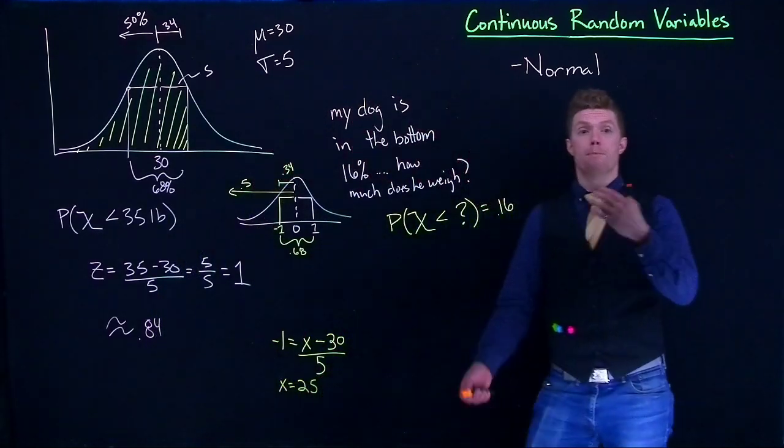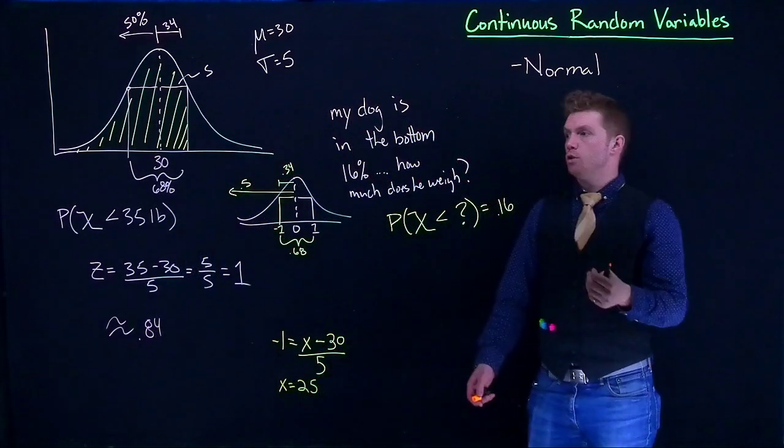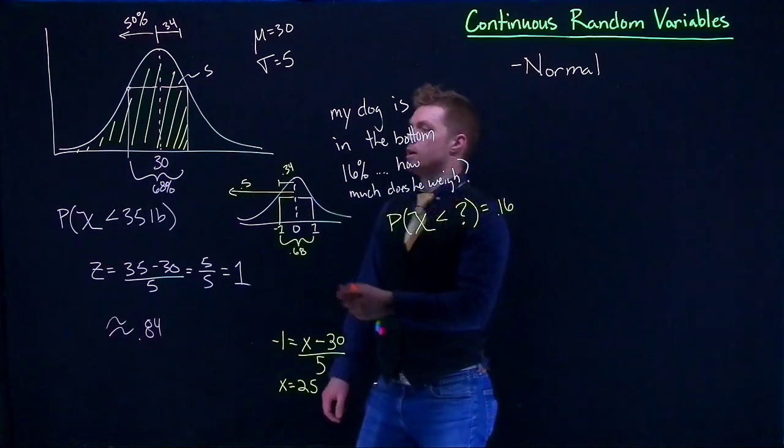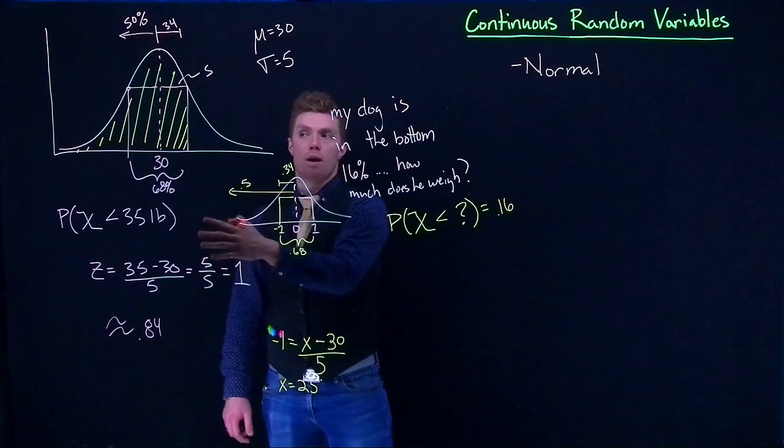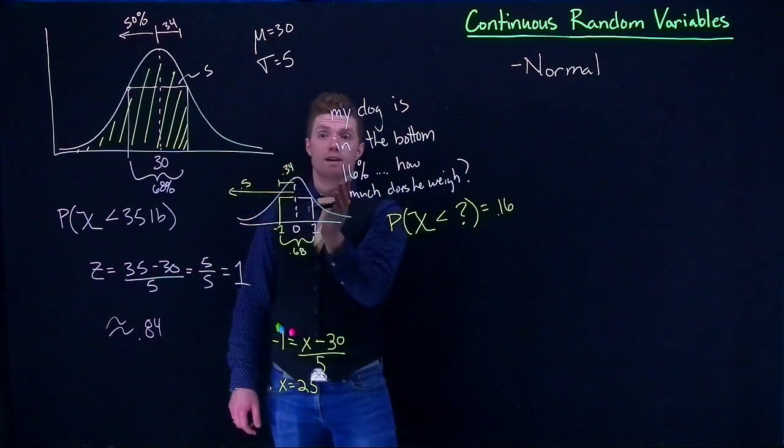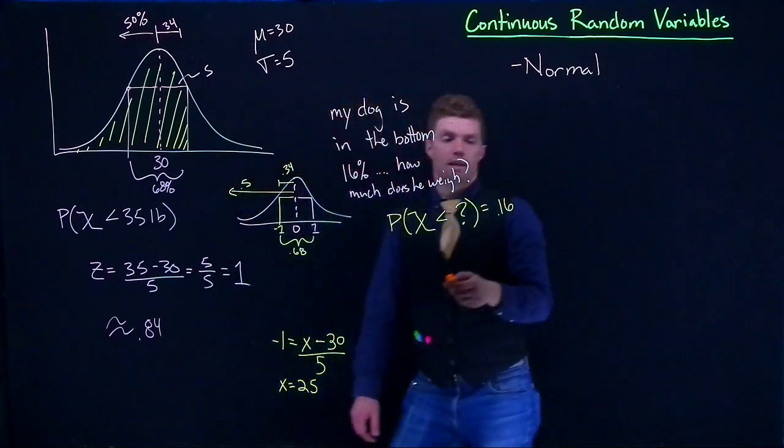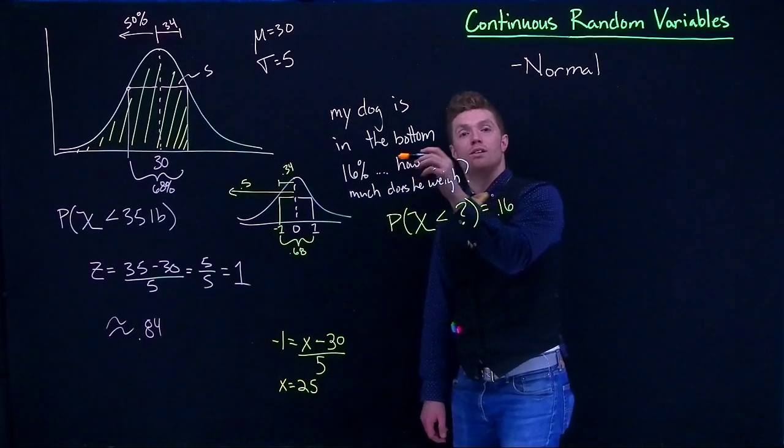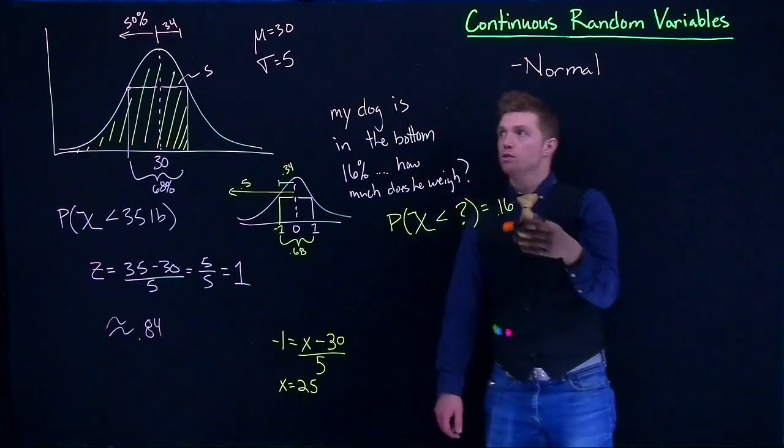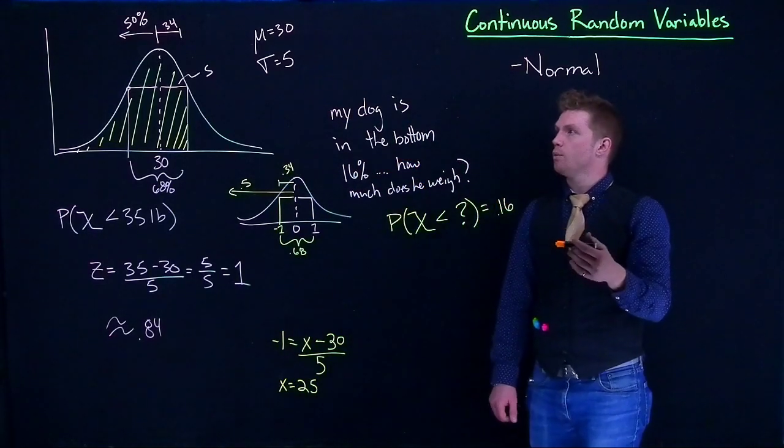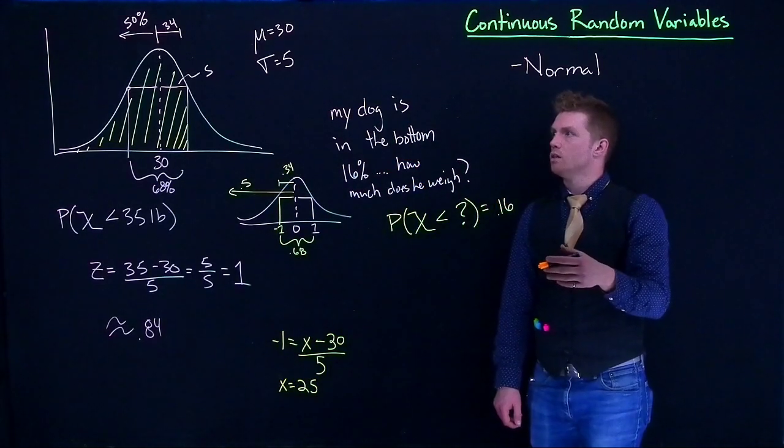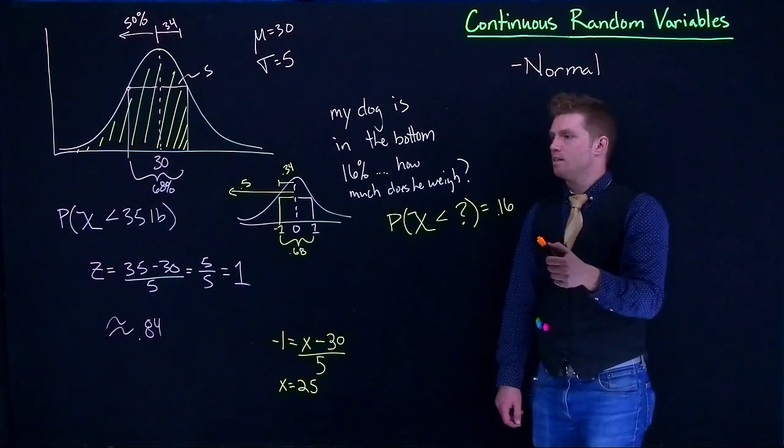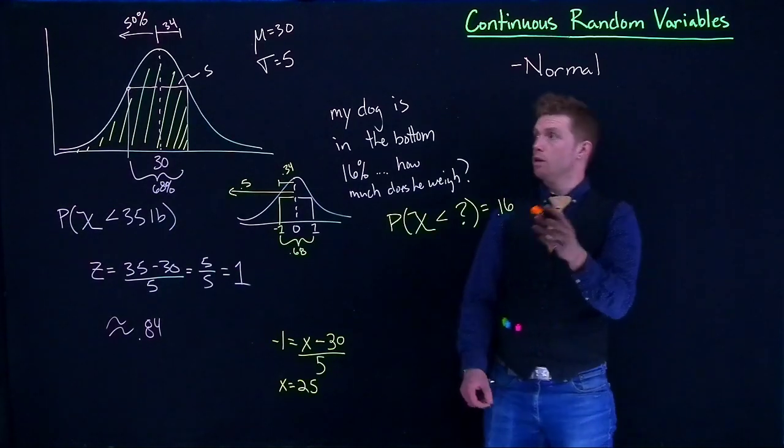So we're able to kind of go back and forth between, if I give you a critical point, can you find me the probability either to the left or to the right of it? Or I give you some probability, can you figure out what the critical value is? So those are kind of two tools that we can use in order to answer these kind of probability questions.